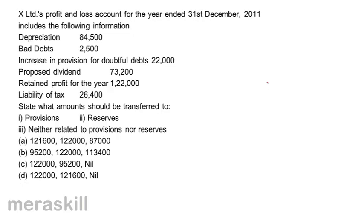Ex-Limited's profit and loss account for the year ended 31st December 2011 includes: depreciation 84,500; bad debts 2,500; an increase in provision for doubtful debts 22,000; proposed dividend 73,200; retained profit for the year 1,22,000; liability for tax 26,400. State what amounts should be transferred to: 1, provisions; 2, reserves; 3, neither provisions nor reserves.